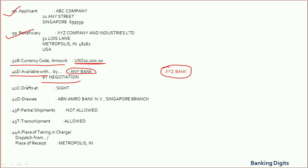Field 42C refers to the tenor of the draft or bill of exchange. In this case, the tenor of the draft should be on a sight basis. Field 42D means the draft should be drawn on the bank named in this field — that bank's name should be mentioned on the draft or bill of exchange. Note that the drawee name can also be different from the issuing bank.